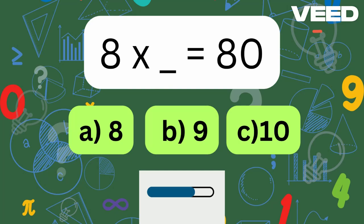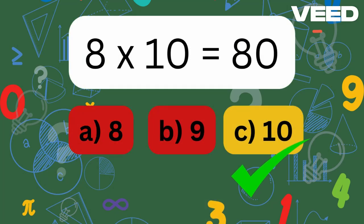8 times what is 80? 8 times 10 is equal to 80.